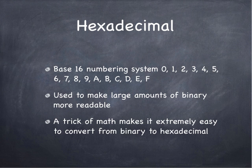Hexadecimal, so decimal, DCI in decimal, deci, it stands for 10. It's a base 10 numbering system. Binary, the bi, means 2. Hexadecimal, hex, means 16. So hexadecimal is a base 16 numbering system.